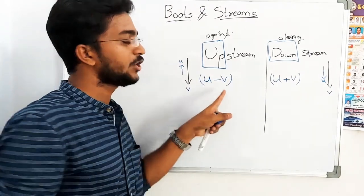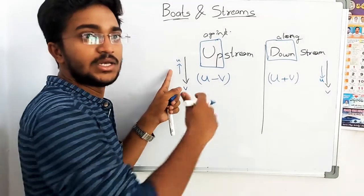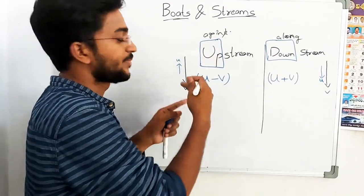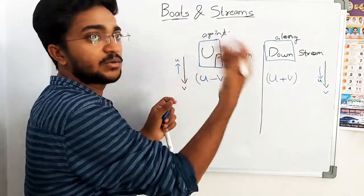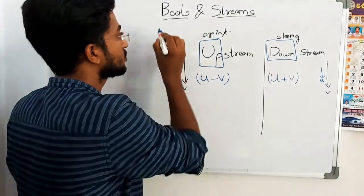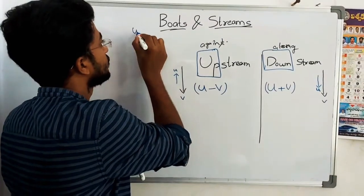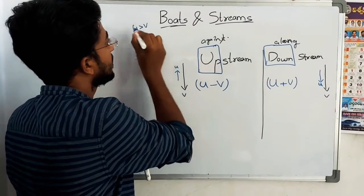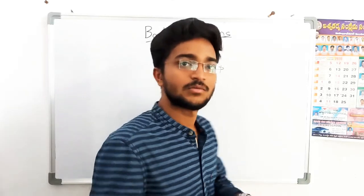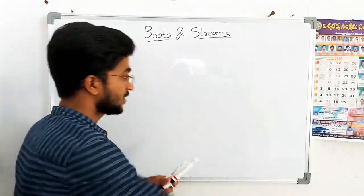Here U is the boat speed and V is the stream speed. We assume U is greater than V. So upstream relative speed is U minus V, and downstream relative speed is U plus V.